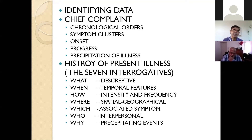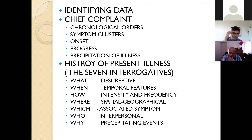'Which' refers to associated symptoms — if one symptom is present, what other symptoms accompany it. 'Who' refers to the interpersonal dimension — to whom is the problem related. 'Why' covers the precipitating events. These seven interrogatives help elaborate the history of present illness for every patient, making the history comprehensive.